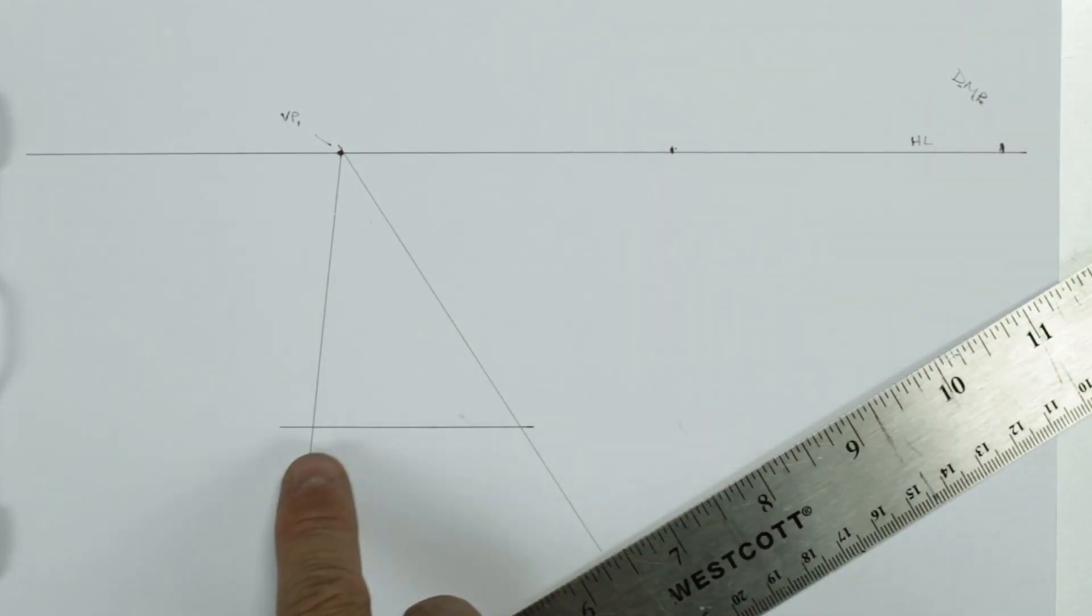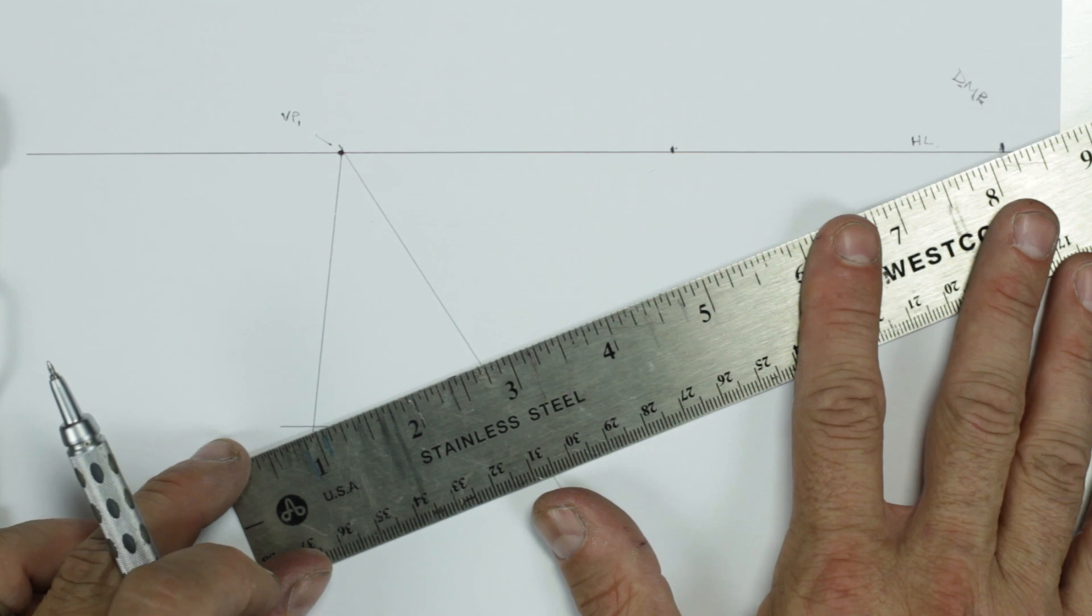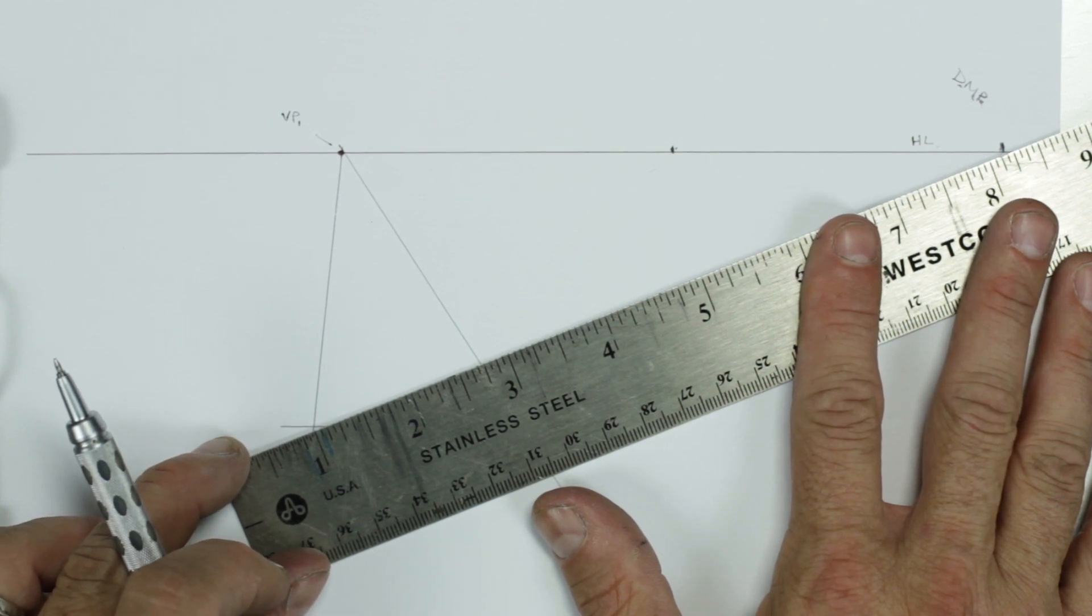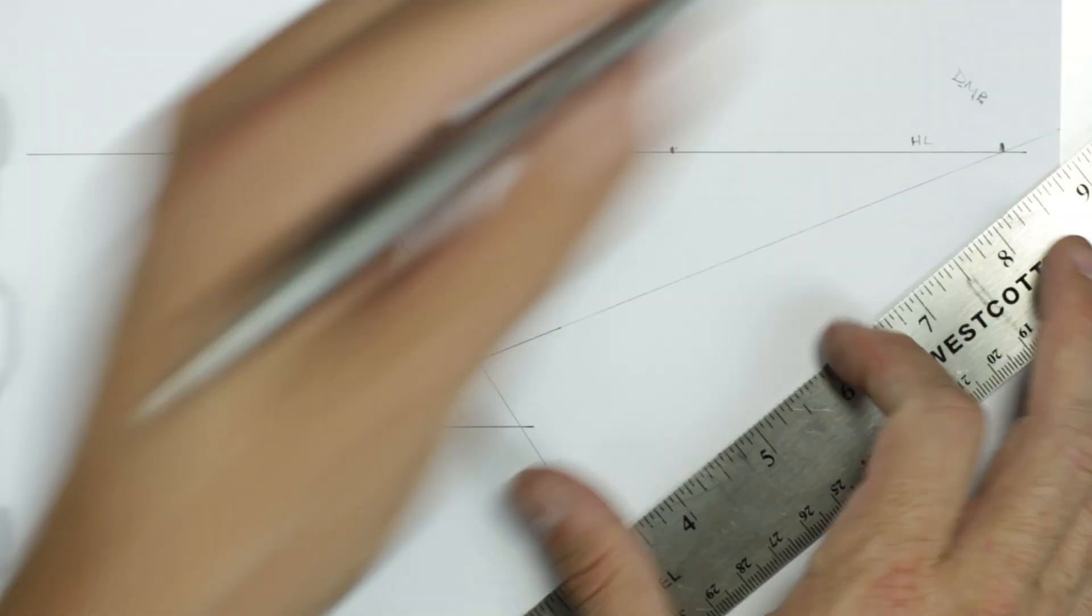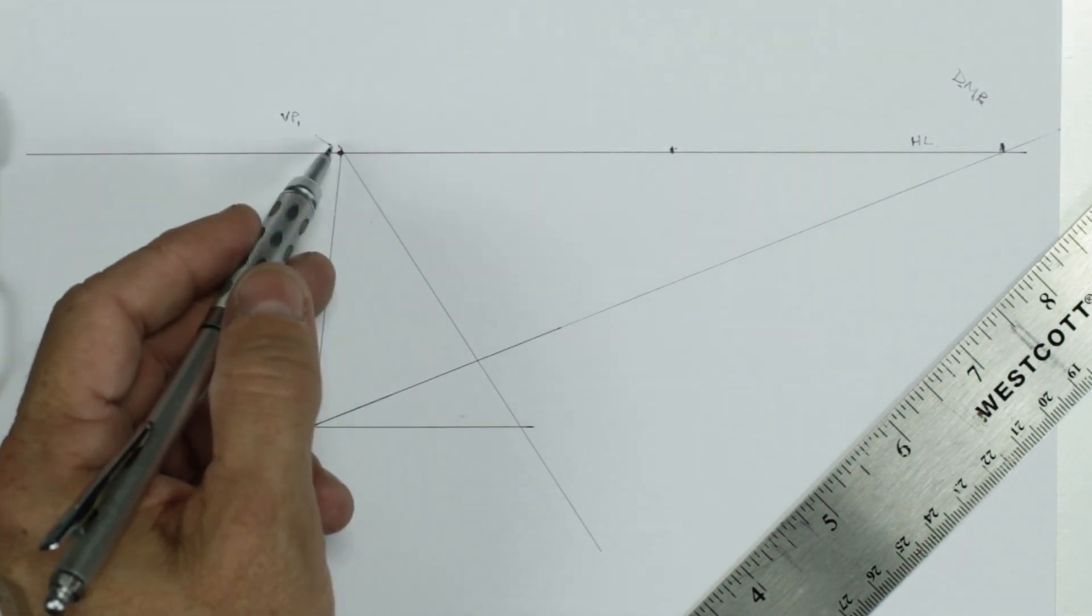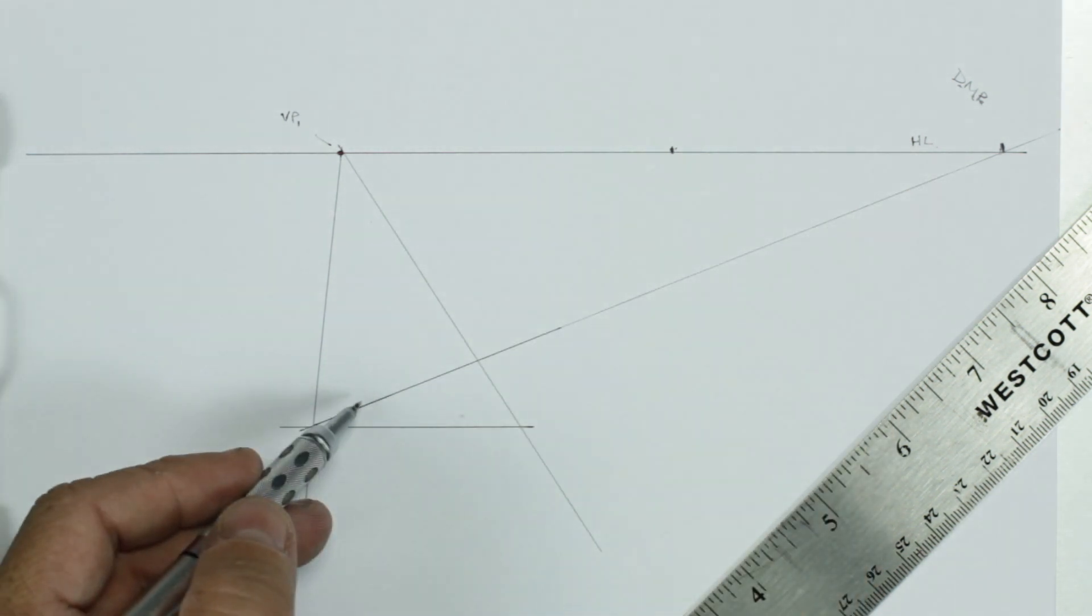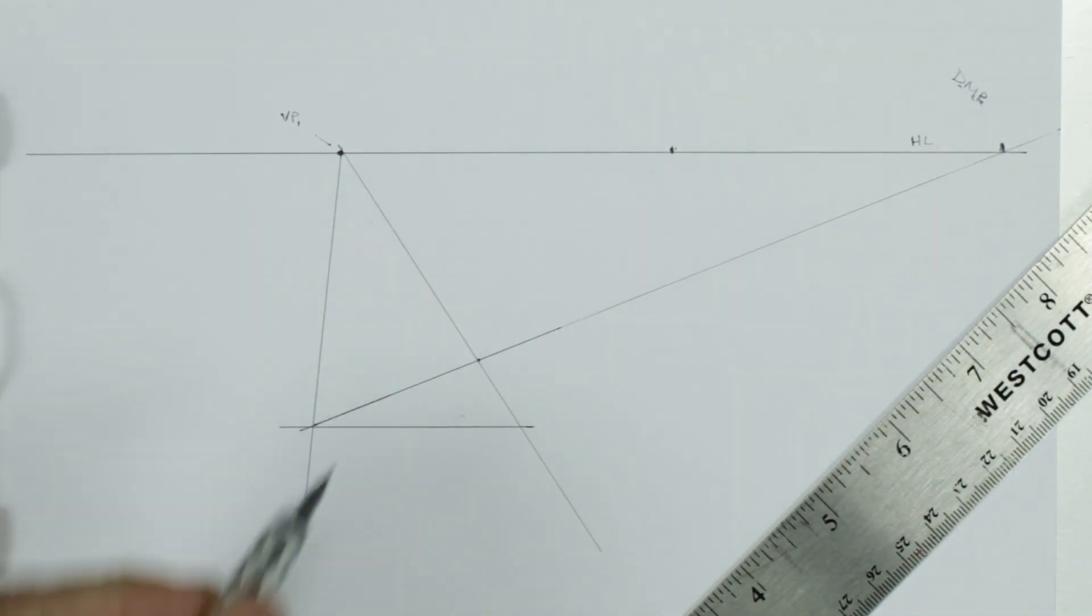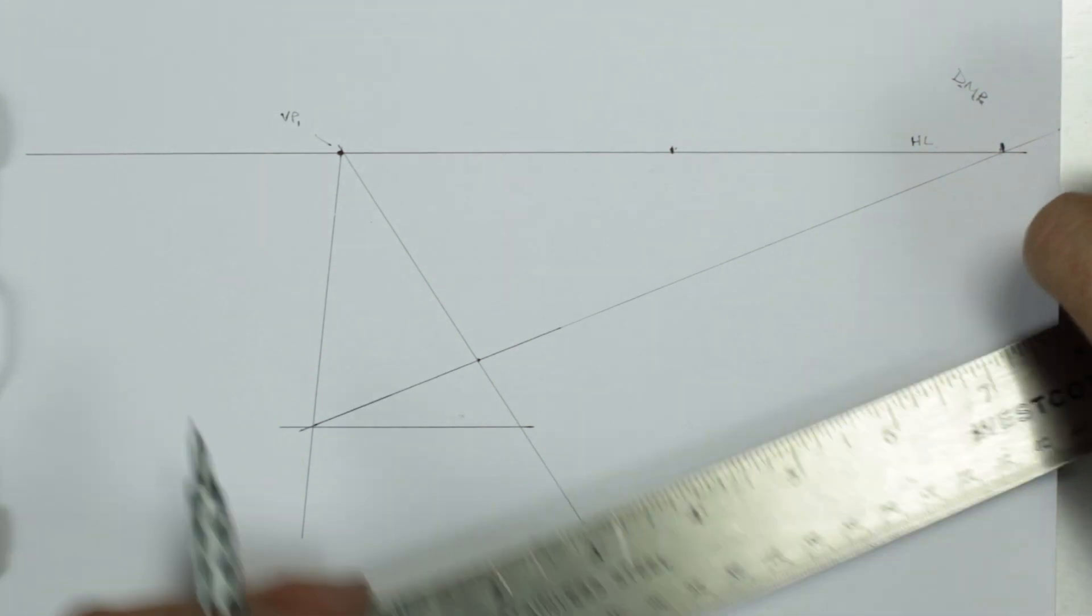We're going to go from this point to this point. We're going to run our diagonal line through those two points. And where this line and this line converge here represents the back edge of our box.